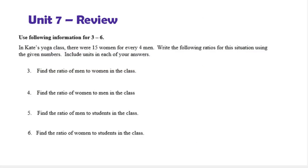Let's look at the next one. Use the following information for 3 through 6. In Kate's yoga class, there were 15 women for every 4 men. Write the following ratios for this situation using the given numbers. Include units in each of your answers. Here we're asked to find the ratio of men to women. And whenever you're asked to find a ratio, look for the word 'to.' This is the unit, in this case men, is going to be your numerator. The unit after 'to' is going to be your denominator.